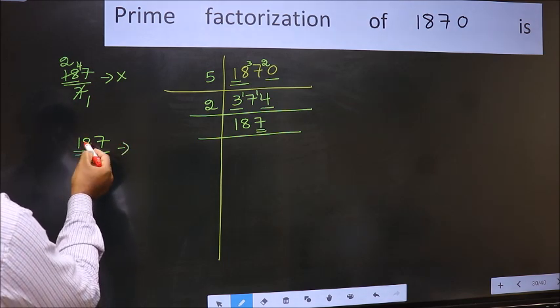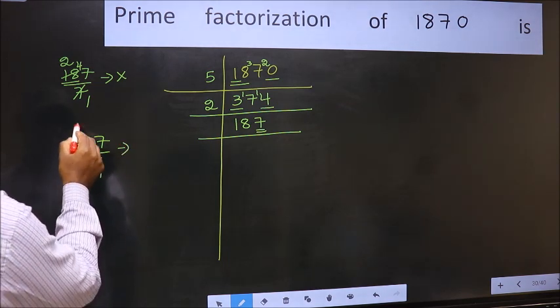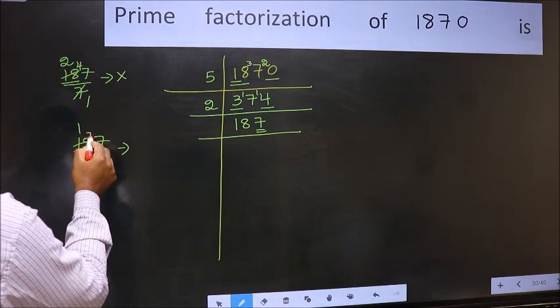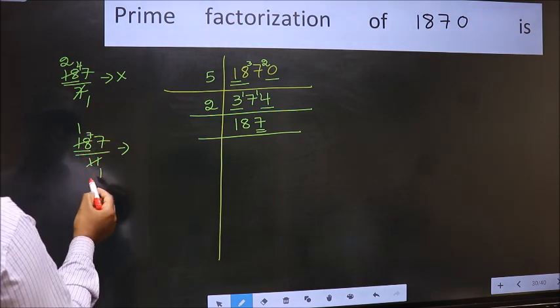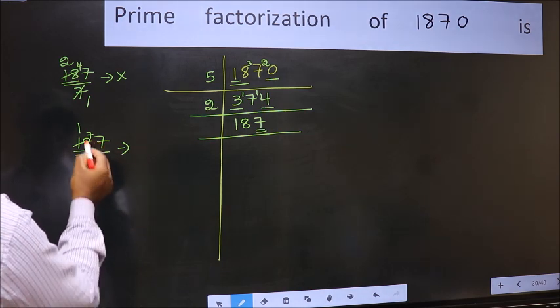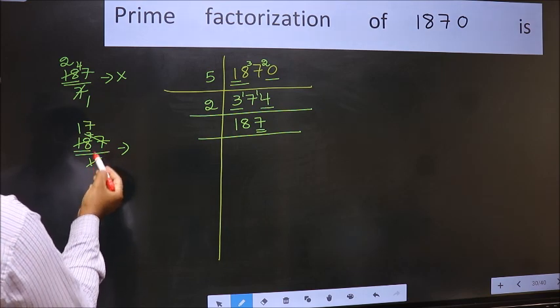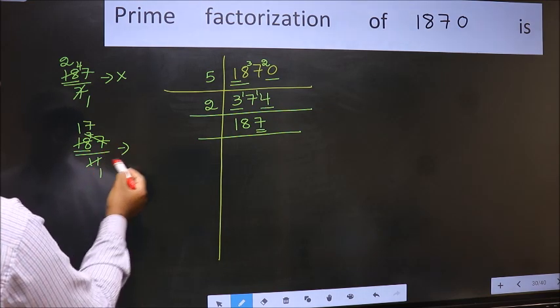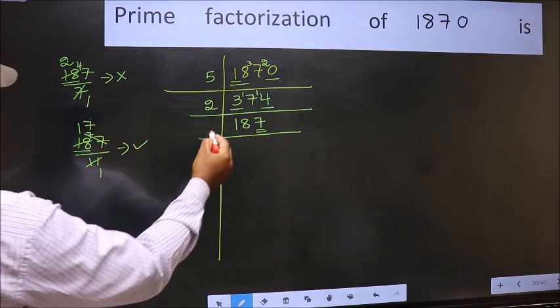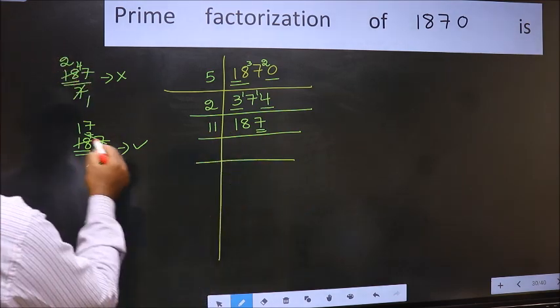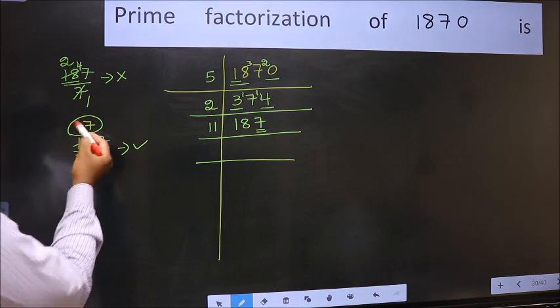A number close to 18 in 11 table is 11×1 = 11. 18 minus 11 = 7, 7 carried forward, 77. When do we get 77 in 11 table? 11×7 = 77. No number has been left out, so this is divisible by 11. So write 11 here, and here we should write this number 17.